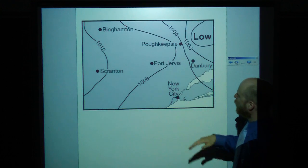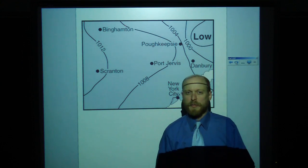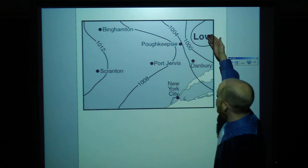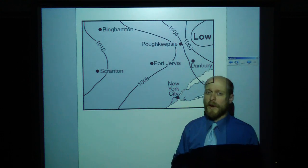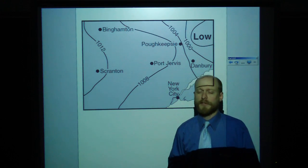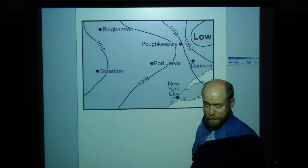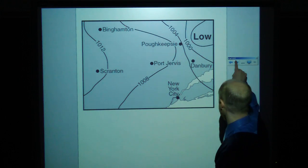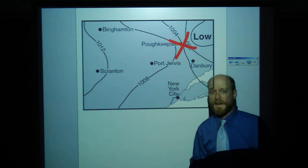Next, here we have air pressure or ISO bars showing air pressure. Low pressure. They may ask where would wind speed be fastest? You're looking for where the lines are closest together. That's where the gradient will be highest and where is that here? Right there. Winds will be fastest there.